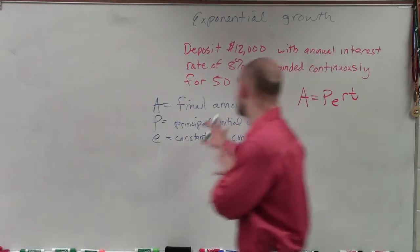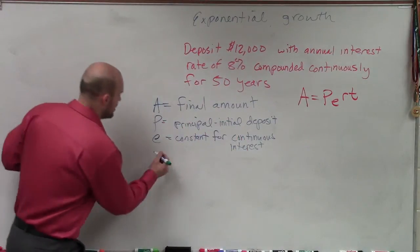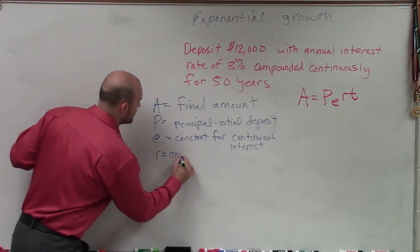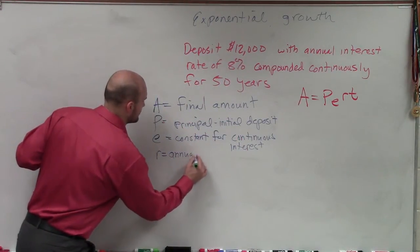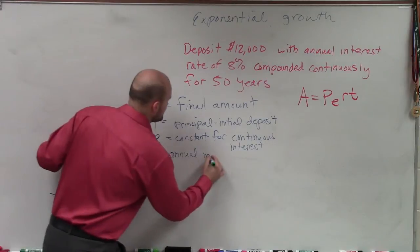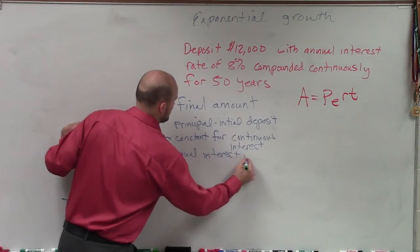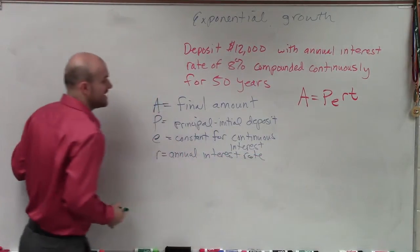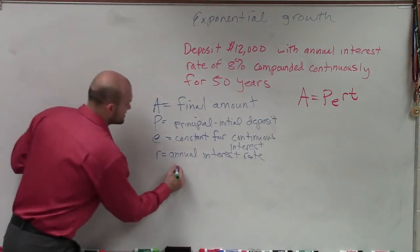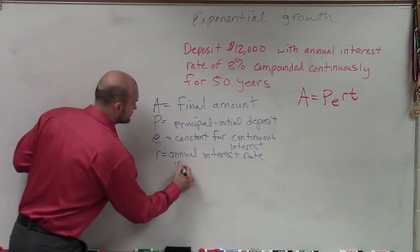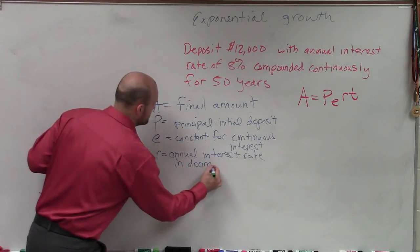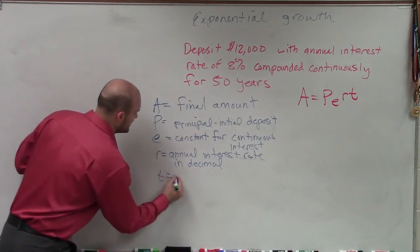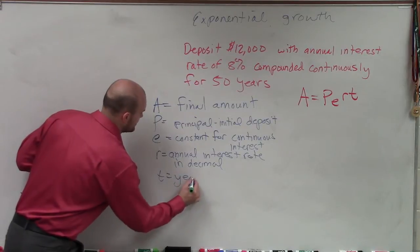We have the constant for the continuous interest. R is your annual interest rate — that's the annual interest rate in decimal form. And T equals the years.